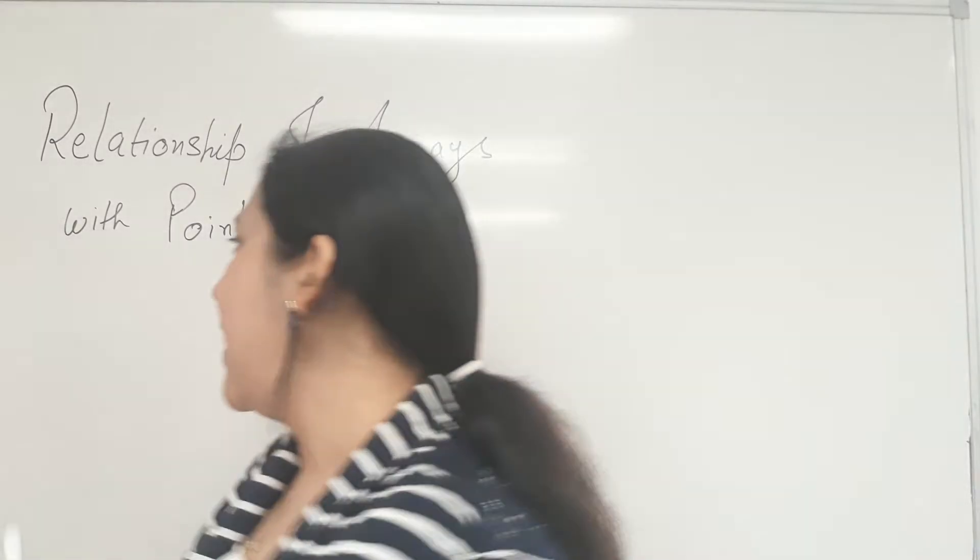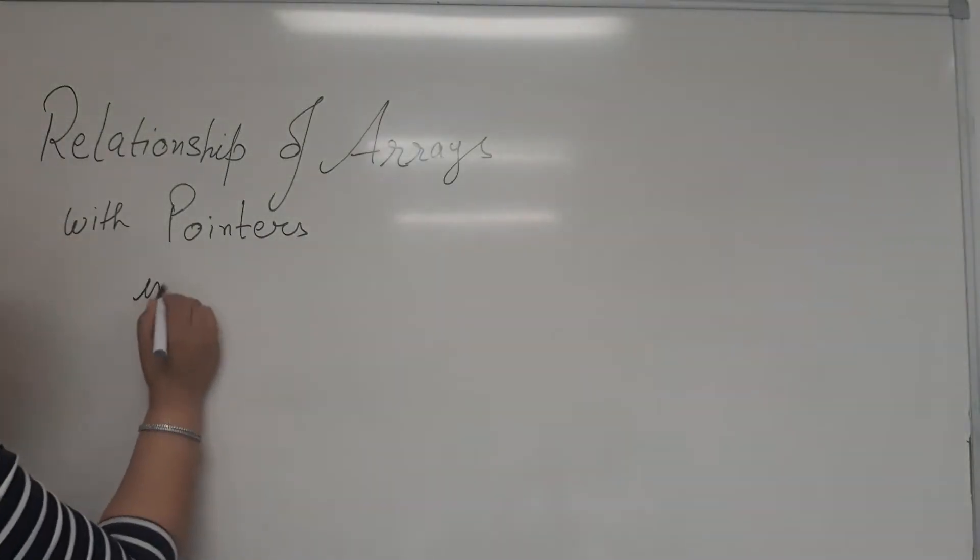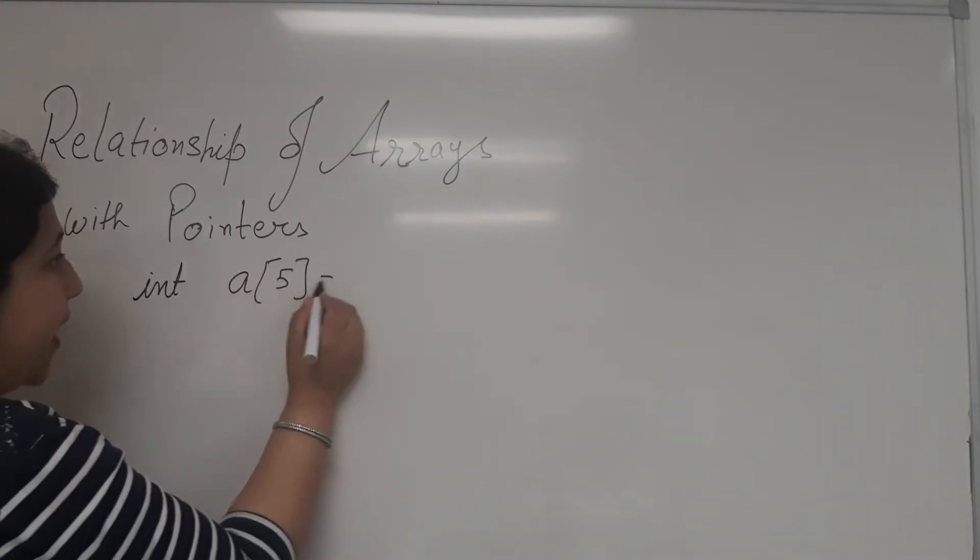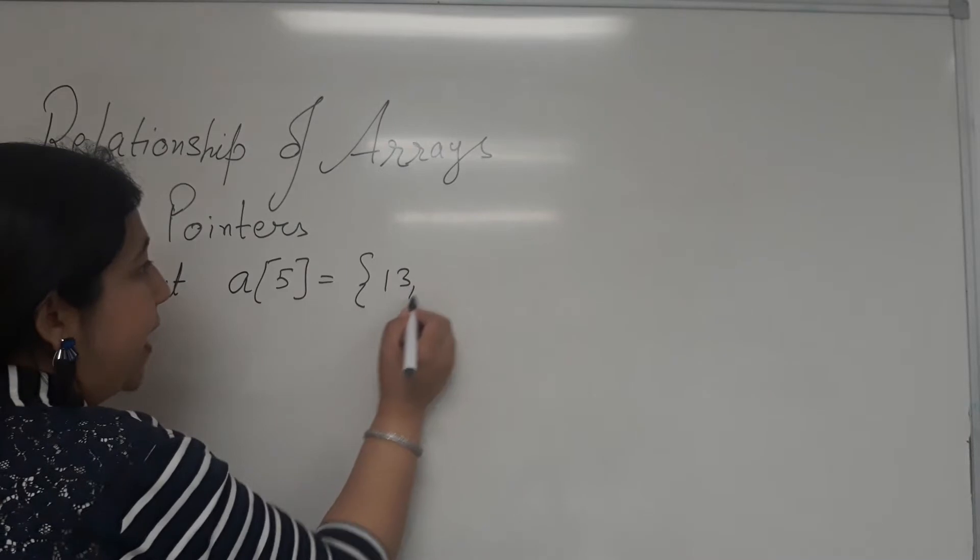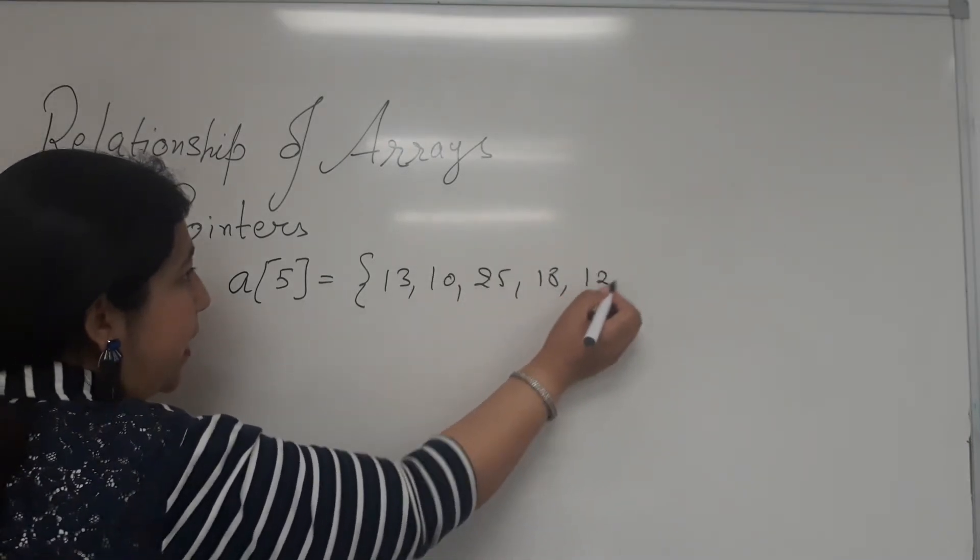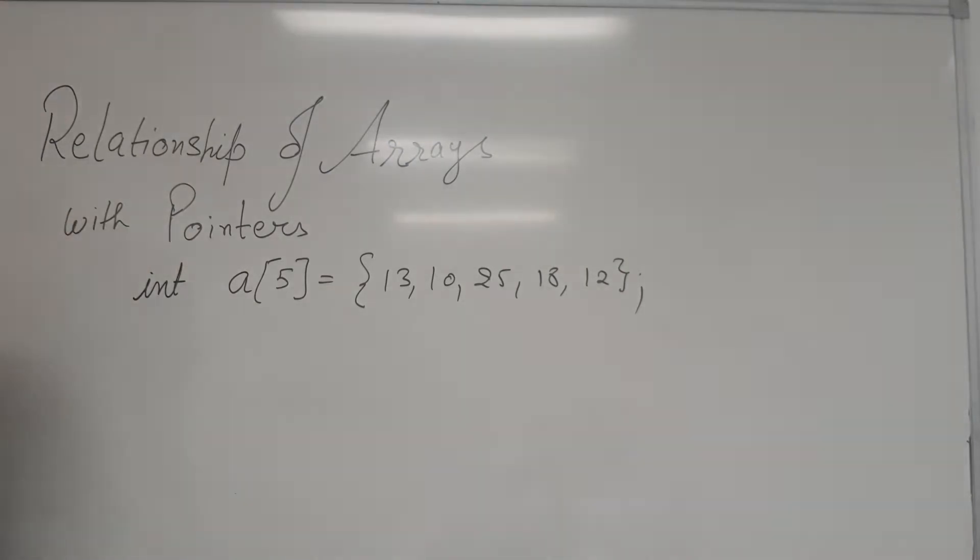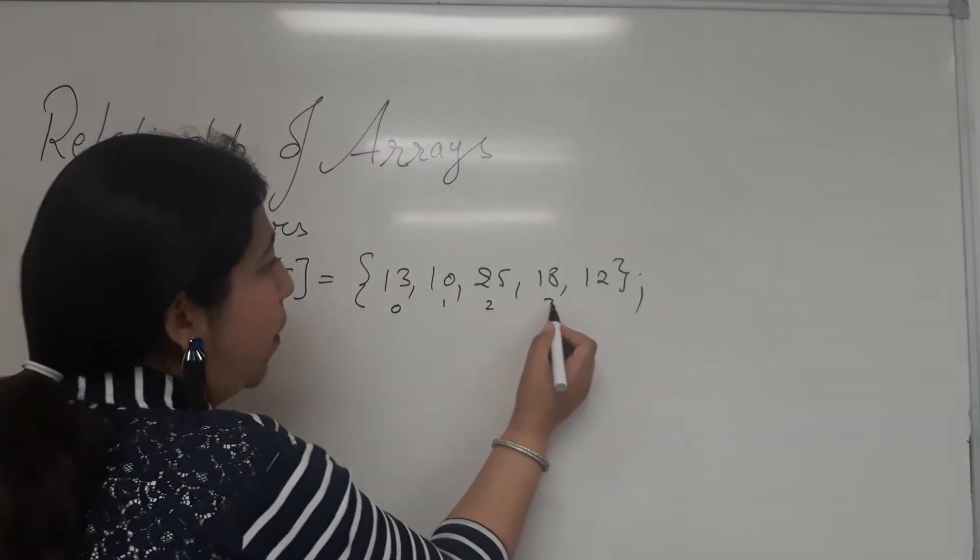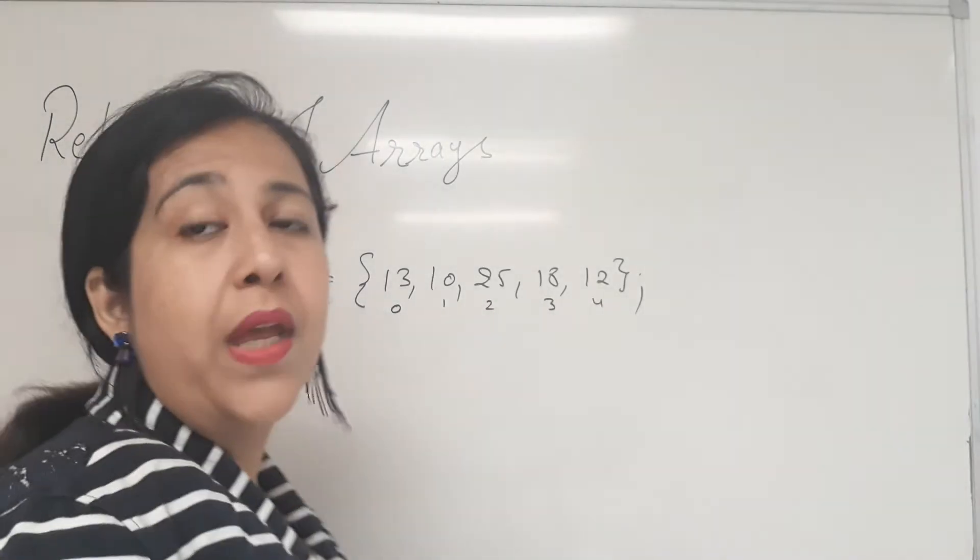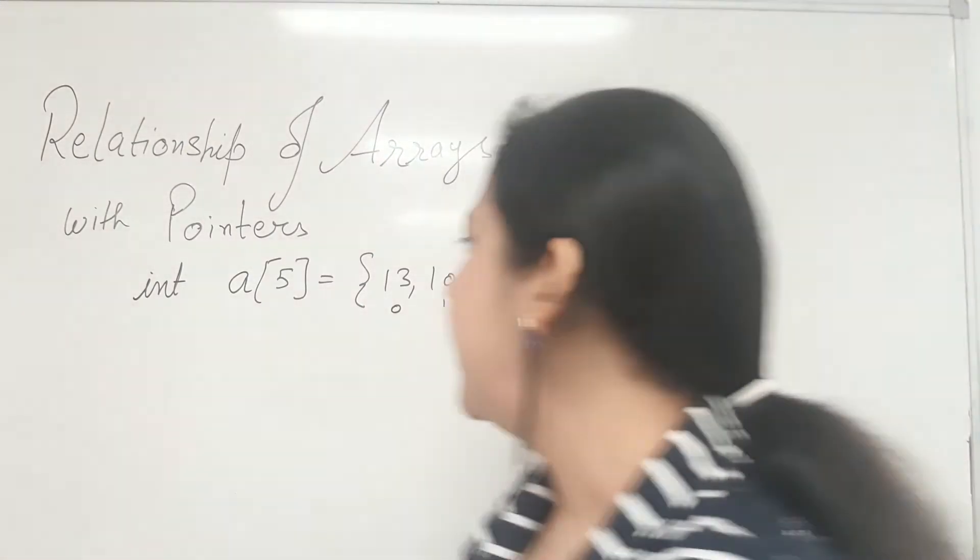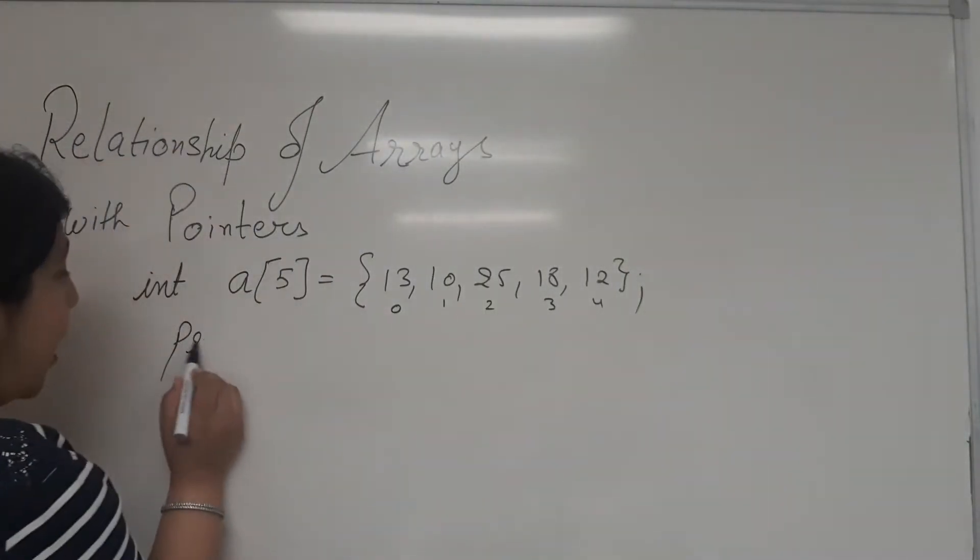First of all, we have an array. We have an array of integer type and let's say there are five elements in this. Five elements, you can initialize your array. So whenever we have to initialize the array, we have to give all the values in curly brackets like this. So the first value automatically goes to 0, then 1, then 2, then 3, then 4. That's how your array is initialized.